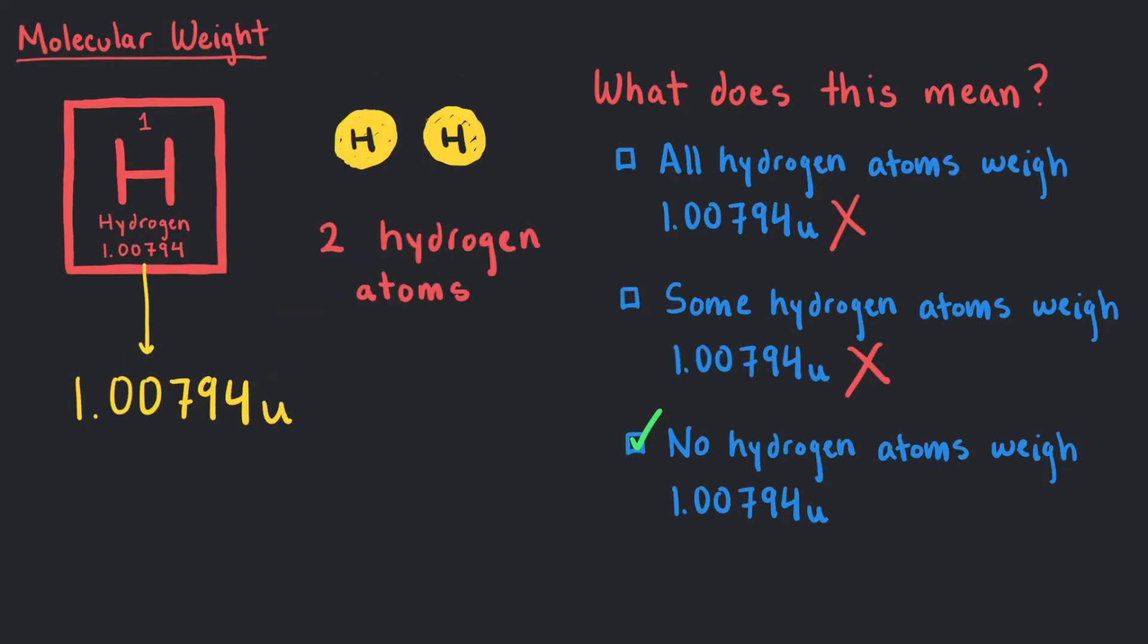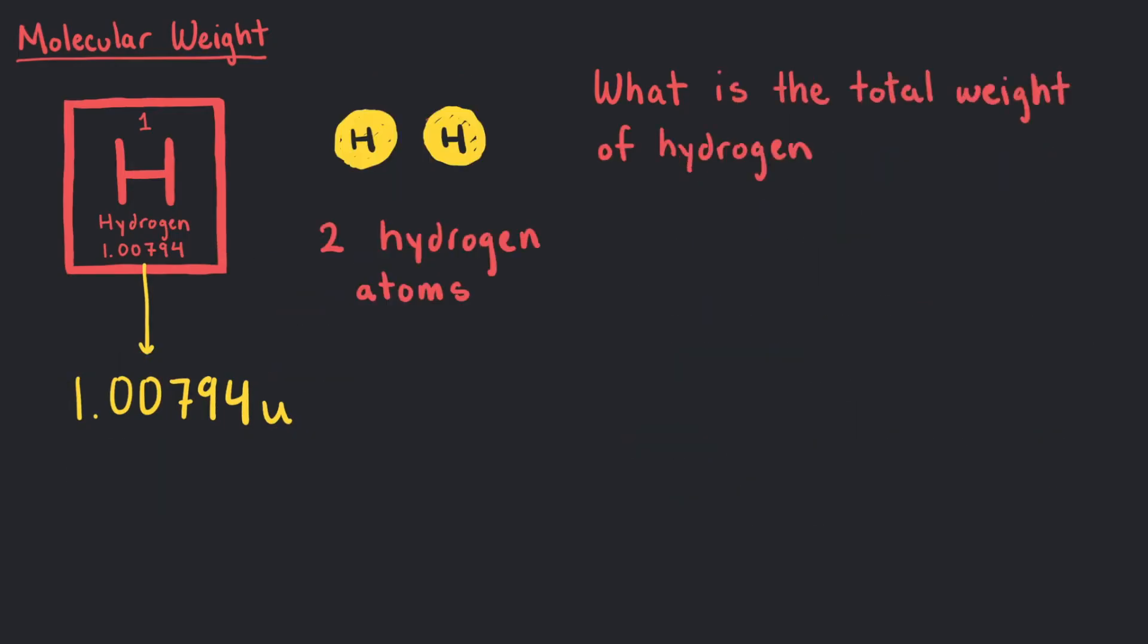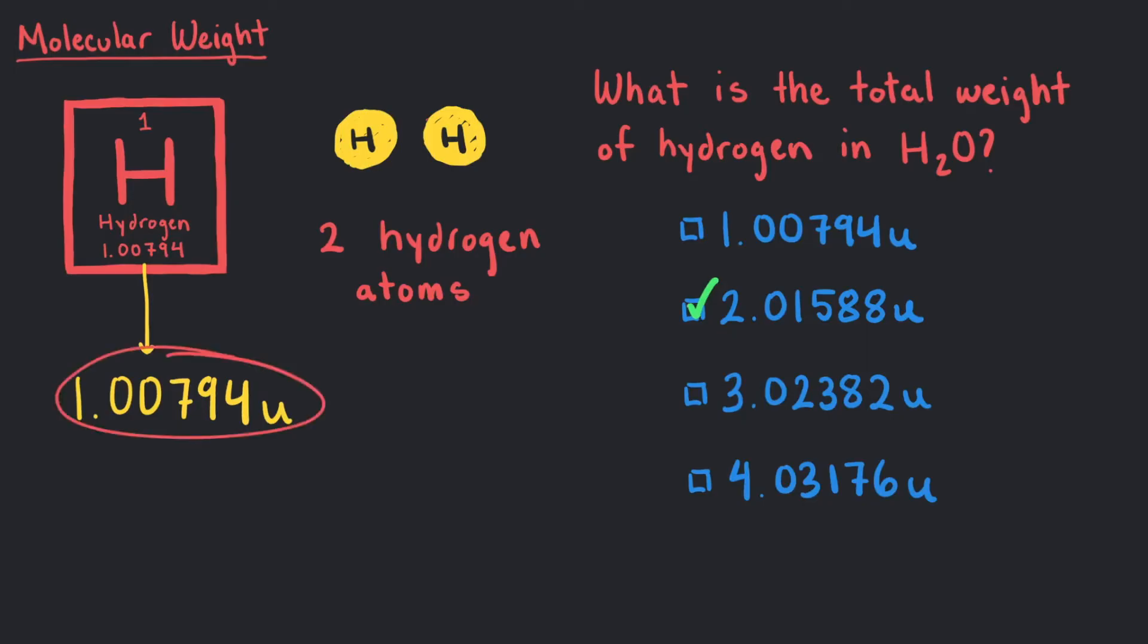If there are two hydrogens, what is the total weight of hydrogen in H2O? To find the weight of the hydrogen atoms, we will take the atomic weight, 1.00794U, and multiply it by 2, which is the number of hydrogen atoms in H2O.